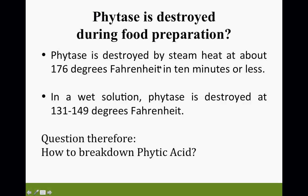In 10 minutes or less it is destroyed in a wet solution. In a wet solution, phytase is destroyed at 131 to 149 degrees Fahrenheit. In a steam solution it's a little higher at 176 degrees. That's why a dehydration process with low continuous heat works amazingly when dealing with phytic acid.